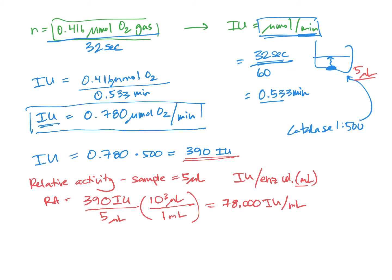That calculates out to 78,000 IU per mil. So if we were to test every last ounce of catalase that was present in our little tube, we would have 78,000 IU of catalase activity per mil.